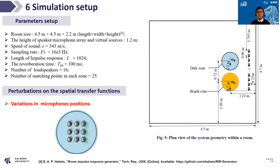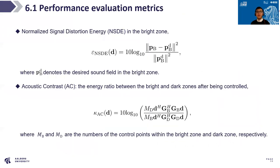From now on I will introduce the evaluation. First, the simulation setup: we simulated a sound reproduction example in a room condition as shown in Figure 5, with the chosen parameters listed. Among different sources of ATF perturbations, we assume the case of microphone position mismatch, where random perturbations in the position of the microphones are generated around their center positions. The performance measures used are: first, the Normalized Signal Distortion Energy (NSDE), defined as the normalized mean square error between the reproduced sound field and the desired field PD within the bright zone; and second, the Acoustic Contrast, defined as the energy ratio between the bright zone and the dark zone.